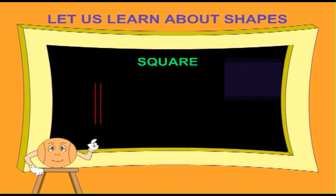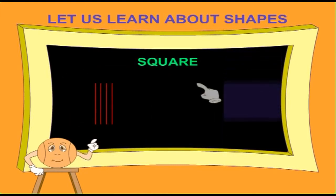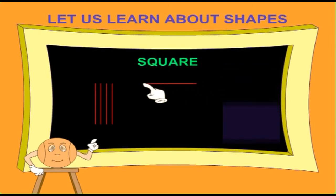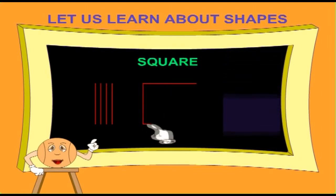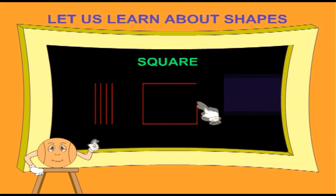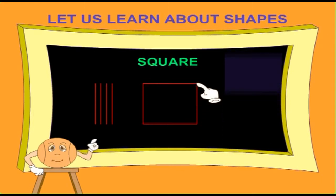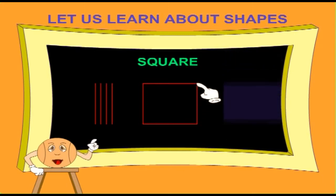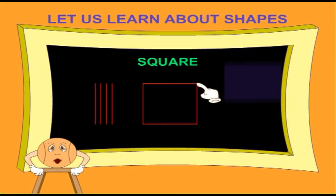A square has four equal sides. One, two, three, four. Side one, side two, side three and side four.